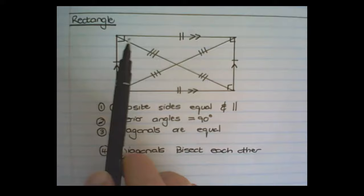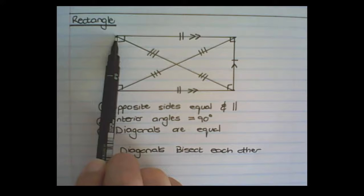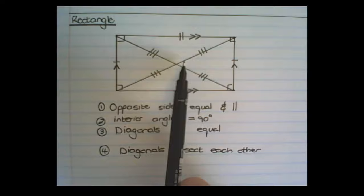What we can see with these lines is that the lines from each diagonal to the center, and all of the other diagonals to the center, are equal in length.